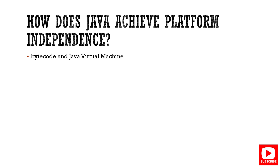Next question: how does Java achieve platform independency? This is an entry-level question. Java is platform-independent because of its bytecode nature. Every time we compile a Java program, it converts to bytecode, which can be executed on any platform using the JVM.